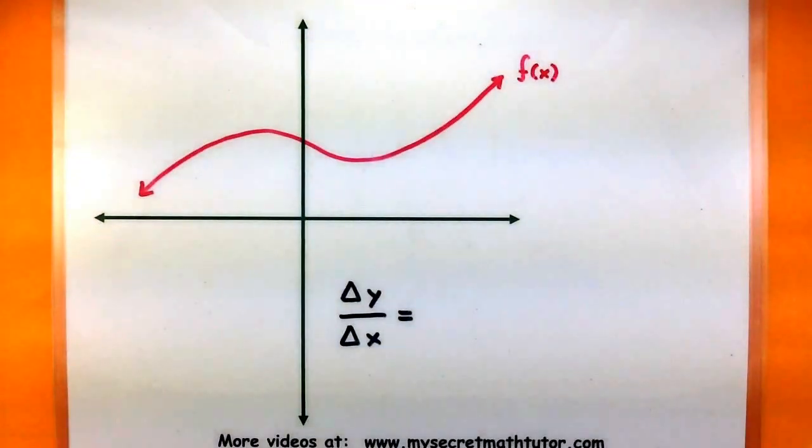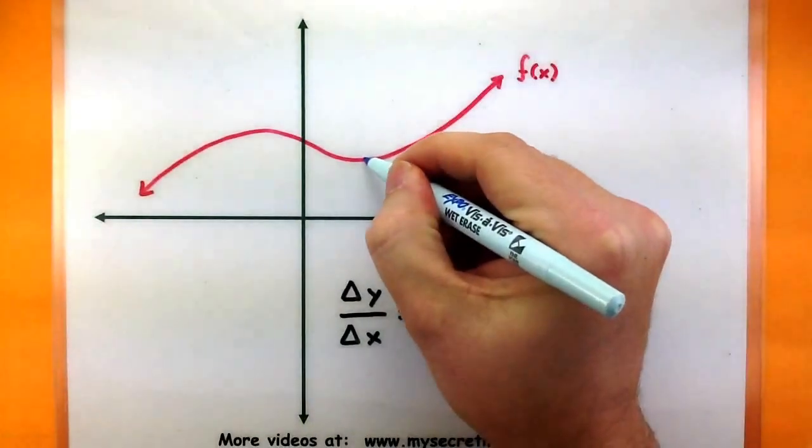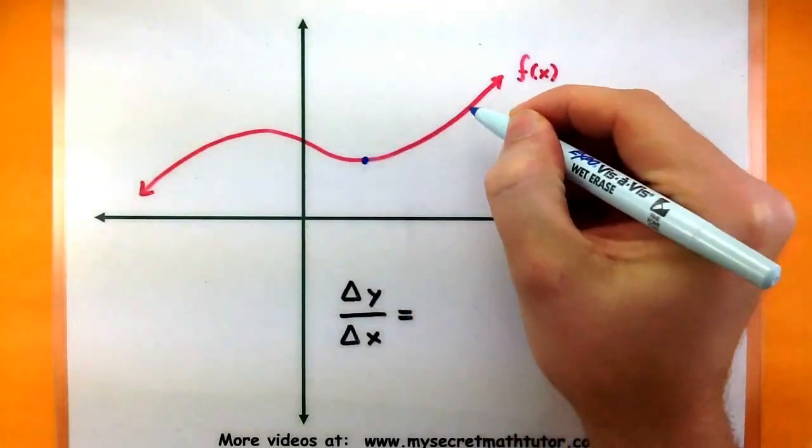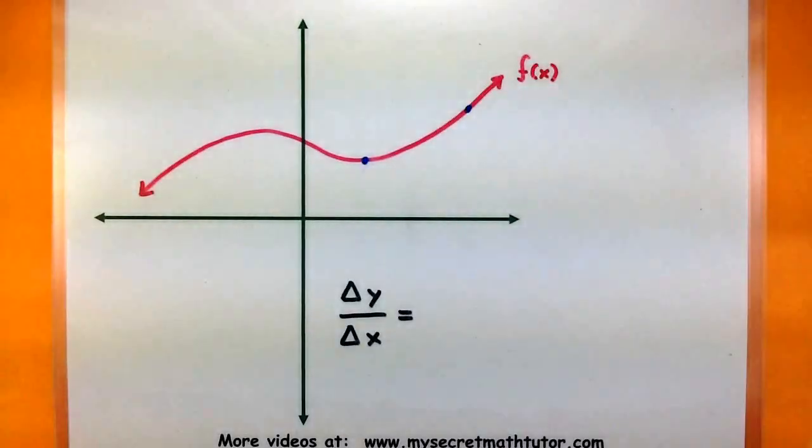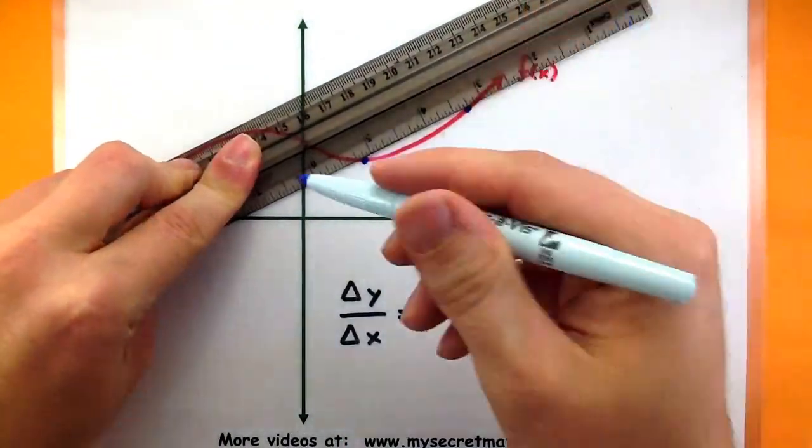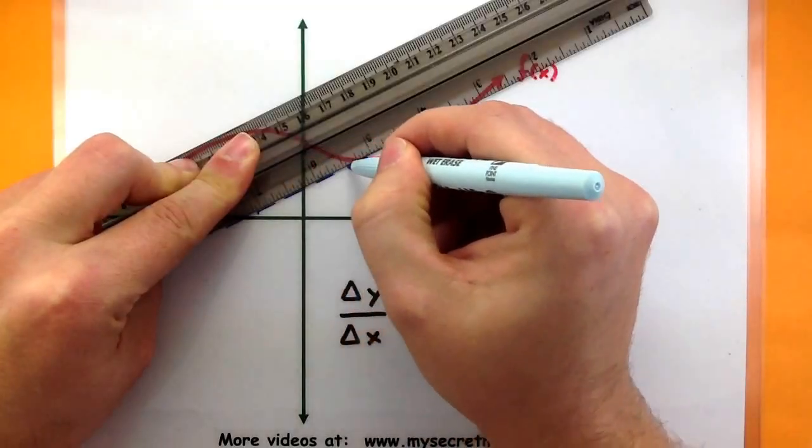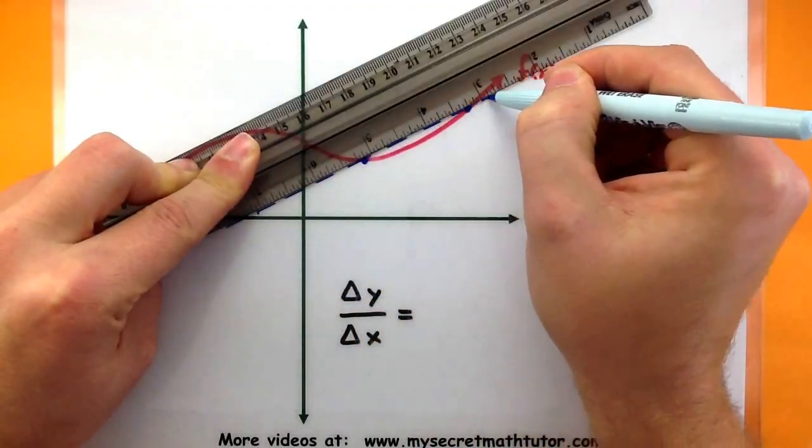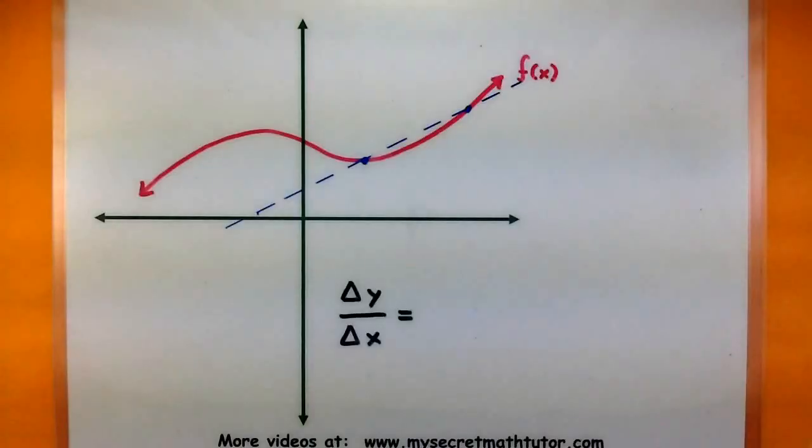Suppose we have a function, and let's call it f of x. I'm curious about how much this function changes between two particular points, and I'll go ahead and mark them out with these two blue dots. In order to figure out how much the function is changing between those two points, what I'll essentially be doing is looking for the slope of the secant line that goes between them. So if I had to draw that secant line, it would look something like this. So we are curious as the slope of that line.